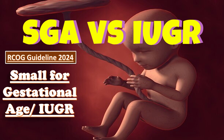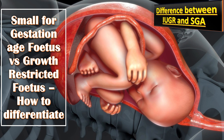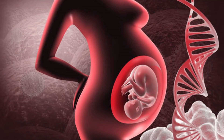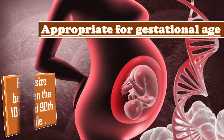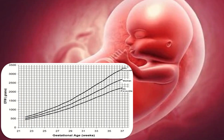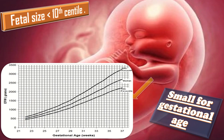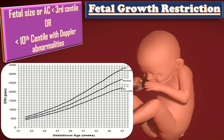What are the differences between small for gestational age and intrauterine growth restriction, and how do we differentiate them? The most common consensus-based definitions suggest that appropriate for gestational age is when fetal size is between the 10th and 90th centile, small for gestational age is when fetal size is less than the 10th centile, and in fetal growth restriction the fetal size or abdominal circumference is either less than the 3rd centile or less than the 10th centile with Doppler abnormalities.